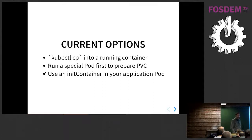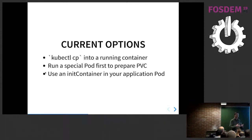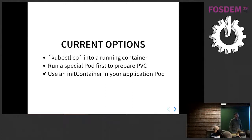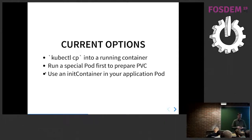The next option is running a special pod ahead of time that knows how to populate the PVC. You create a Docker container that maybe has wget in it and steps to do the download or pull that data in. This is better, but you still have to make sure it runs before your actual application, and if you have multiple PVCs to manage this way, you're in charge of managing all of that — which is something Kubernetes was supposed to help us solve.